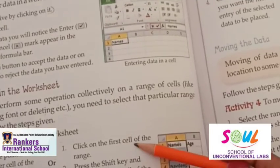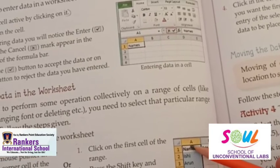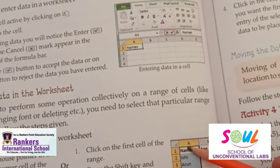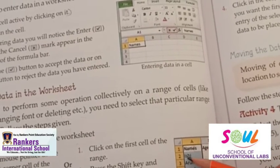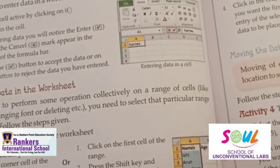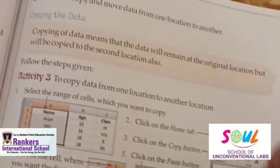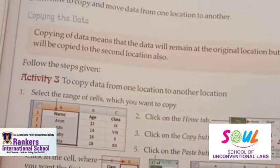Click on the first cell of the range, then hold the Shift key and click on the last cell to select the entire range. Using Shift key we can select a range of cells.